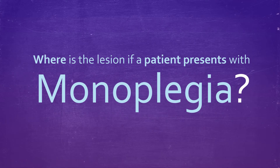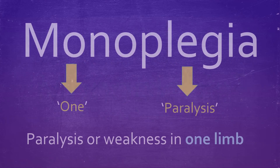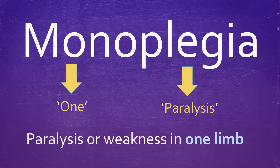The question we are asking ourselves is: where is the lesion in a patient who presents with monoplegia? First of all, we define monoplegia. This literally means 'one paralysis.' The definition is paralysis or weakness in one limb.